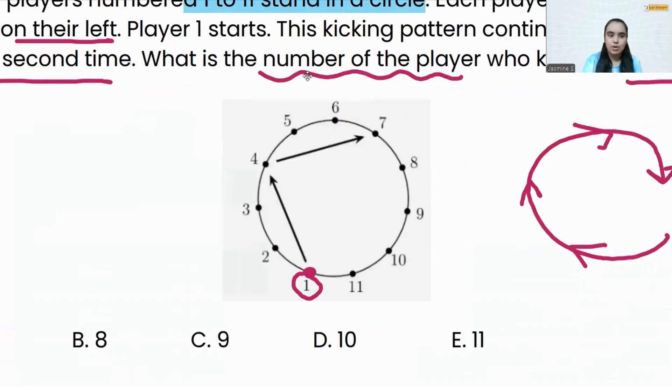So 1 will go to 4, 4 will go to 7, 7 is going to kick the ball to 10, right, third person on the left. And can you check? 10 is going to kick number 2. Three steps to the left.